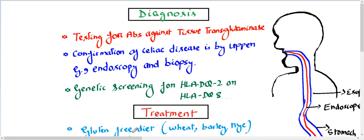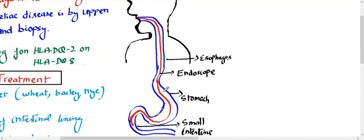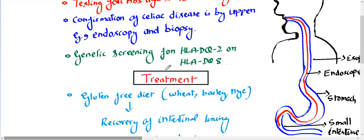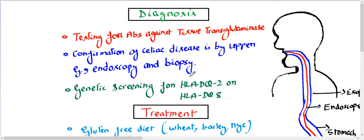For diagnosis: tissue transglutaminase antibodies enter the circulation, but they are not 100% accurate. So we perform confirmatory tests like upper endoscopy and biopsy. The endoscope goes into the small intestine, a biopsy sample is taken, and examined under the microscope. The histological features are villus atrophy, increased number of intraepithelial lymphocytes, and crypt hyperplasia. We can also do genetic testing for HLA-DQ2 or DQ8.